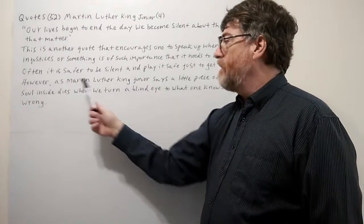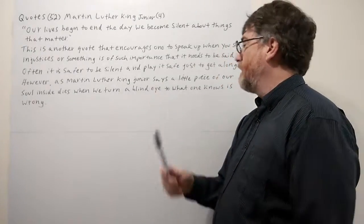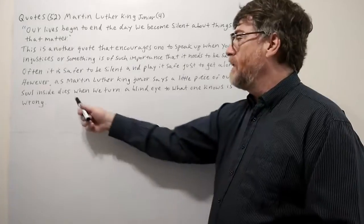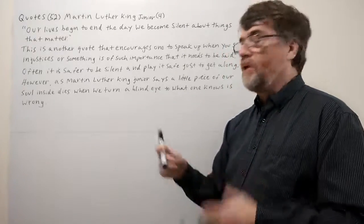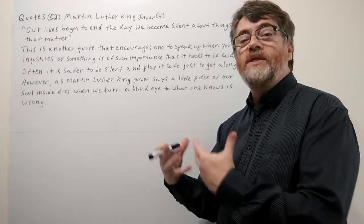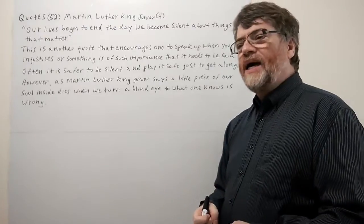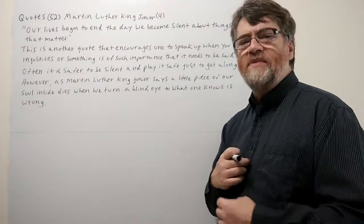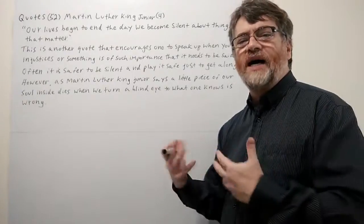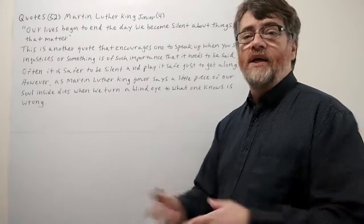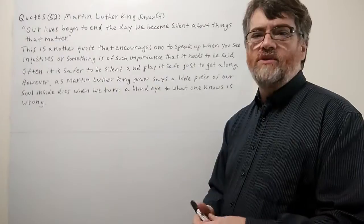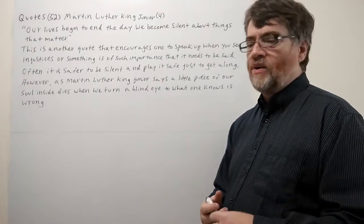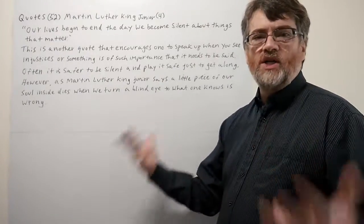However, as Martin Luther King Jr. says, a little piece of our soul dies when we turn a blind eye to what one knows is wrong. You can probably do this once or twice, but if you keep doing this, maybe little pieces inside of you kind of die until you become numb to all the things that you see are wrong in the world or things that are unjust.